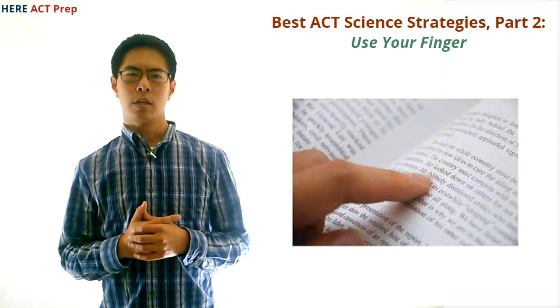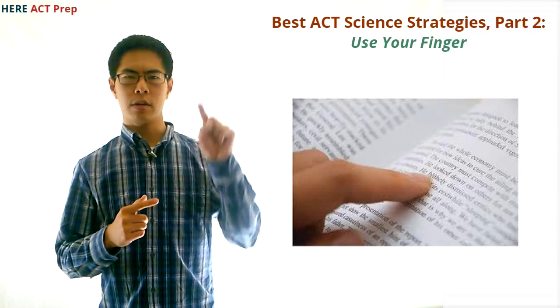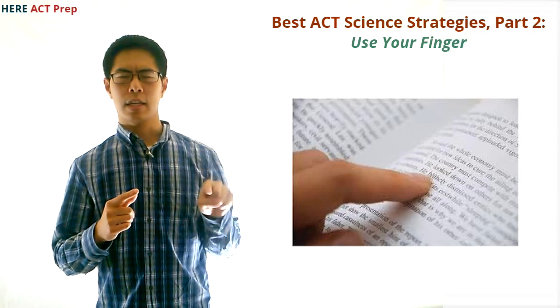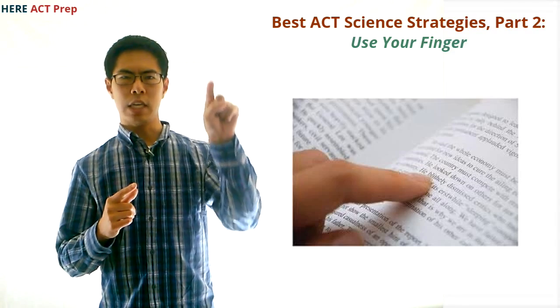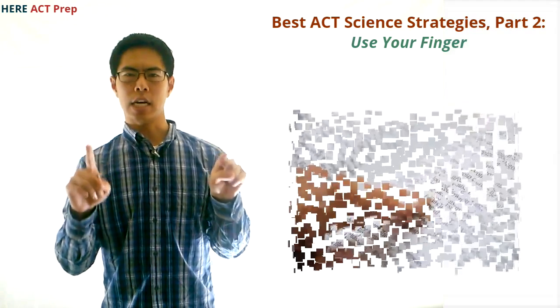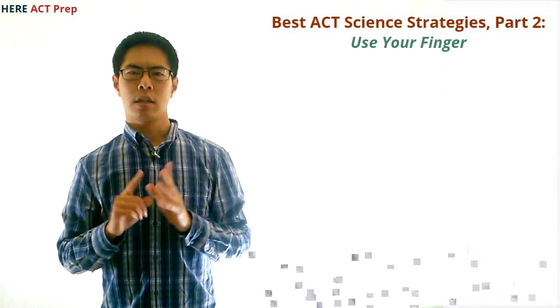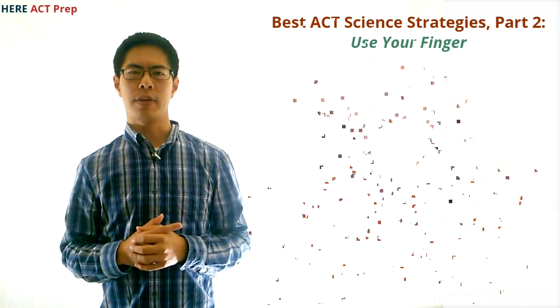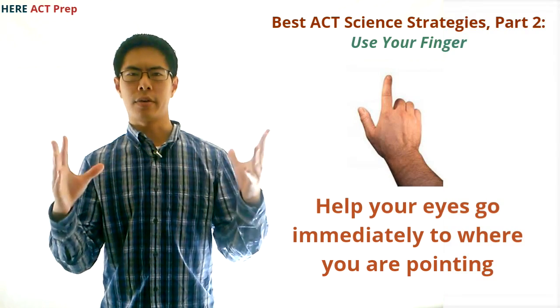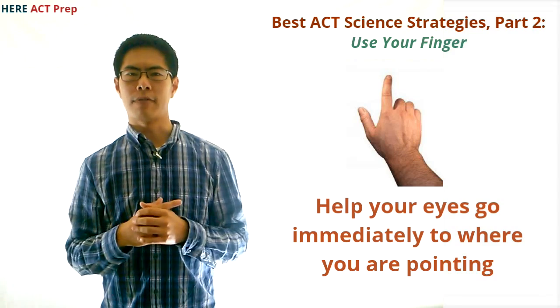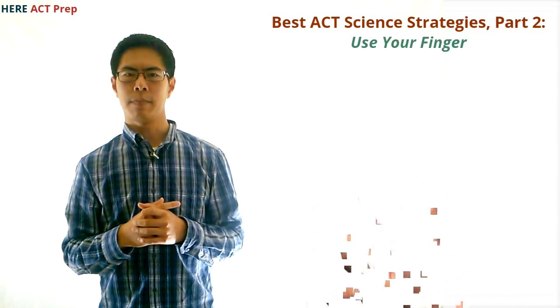To help solve this problem, you should use your fingers to find and keep track of key pieces of information in each science passage. The reason why using your fingers is so effective is because your eyes naturally go to where you are pointing instead of wandering around trying to find what you're looking for, and this will save you a lot of time searching around for the information you need.